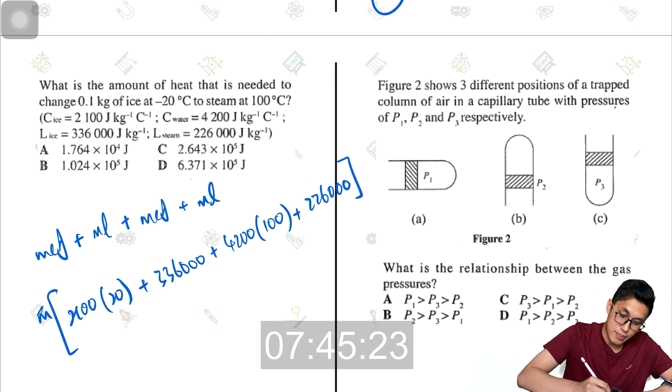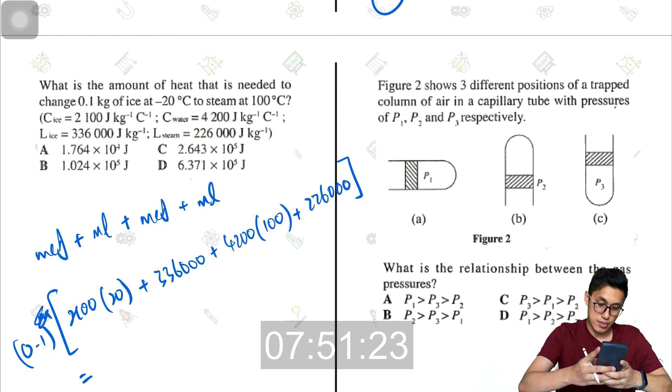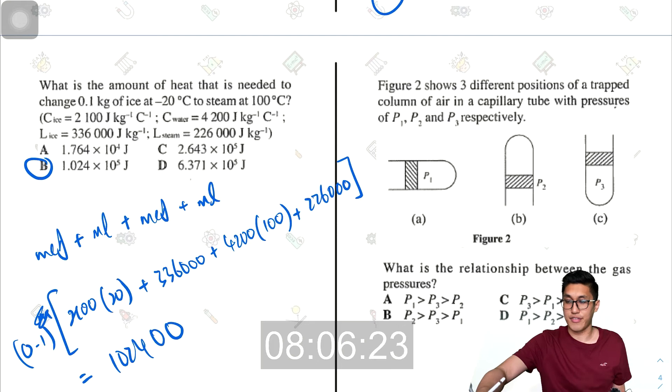So M here should be 0.1. I'm just going to put that in. And in total, this should be times 20 plus 336,000, plus 4200 times 100, plus 2,260,000 times 0.1. This is 1,024,000, that would be 1.024 times 10 to the power of 5.